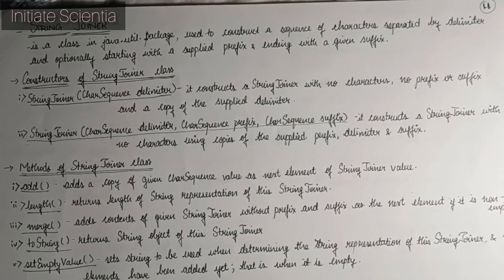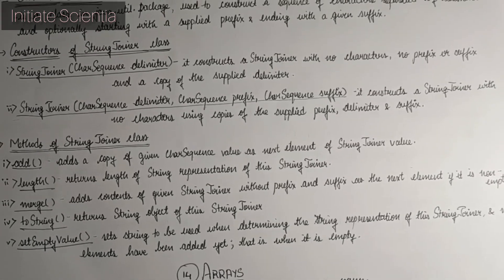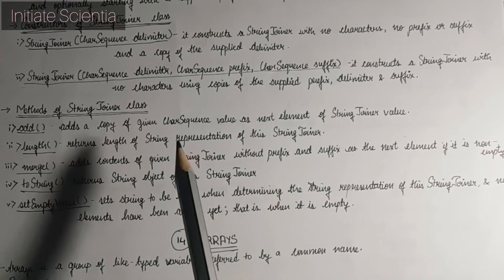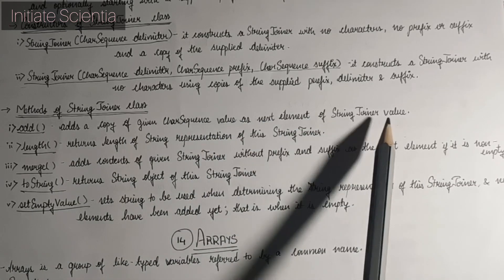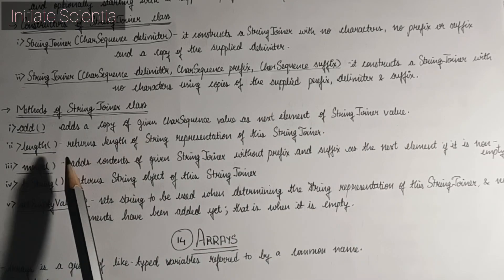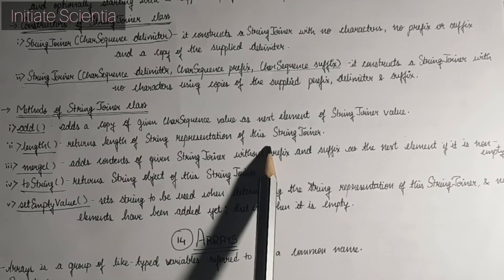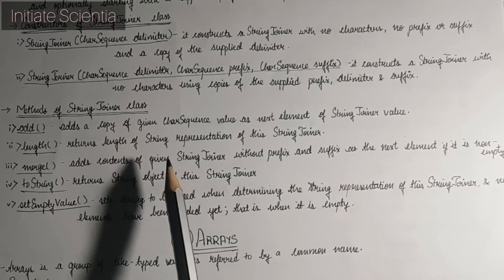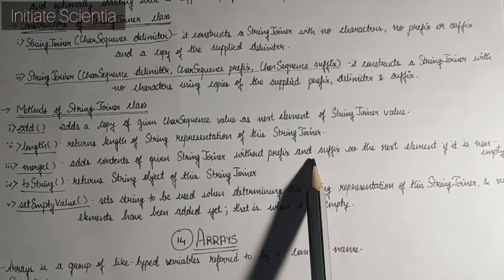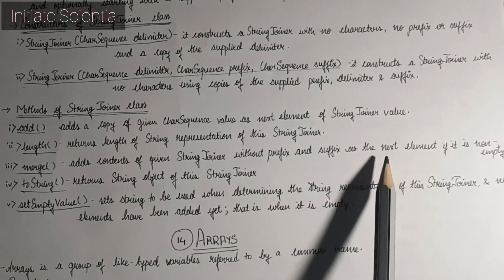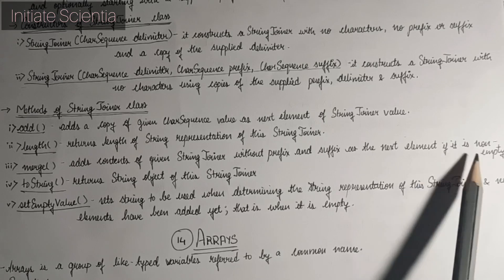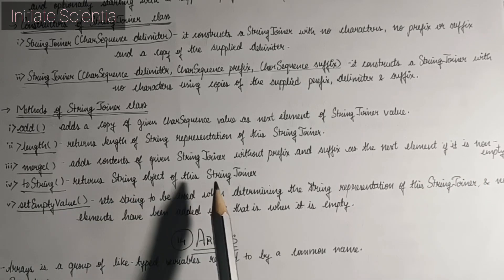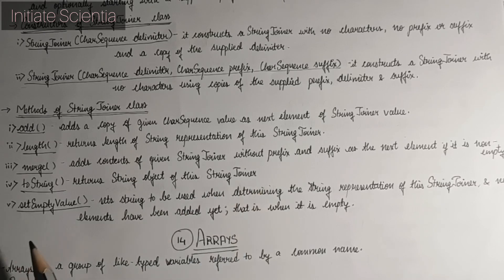Methods of StringJoiner: add() adds a copy of the given CharSequence value as the next element of the StringJoiner. length() returns the length of the string representation of this StringJoiner. merge() adds the contents of a given StringJoiner without its prefix and suffix as the next element, if it is non-empty. toString() returns the string object of this StringJoiner.